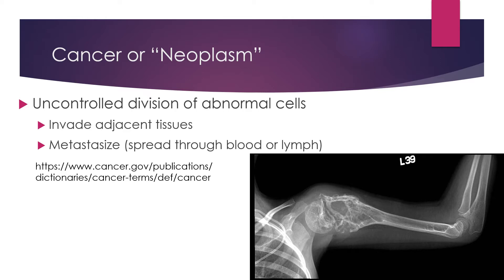Here we have this radiograph, and you can certainly see the unusual destruction of the proximal humerus. One thing that is important to notice is if you look at the radius, you can see the epiphyseal plate. This is an interesting thing about bone cancers. Primary bone cancers — the ones that start in the bone — are mainly the domain of adolescents and older children because their bones are growing and have a high turnover rate.